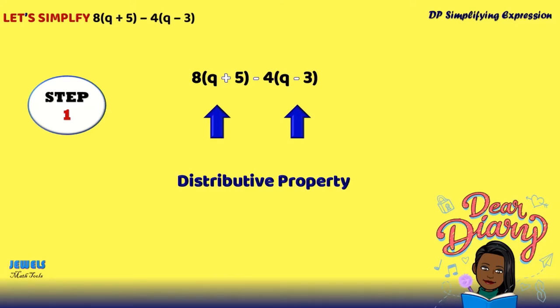We're going to be distributing our terms outside of our brackets to everything inside of their respective brackets. We'll begin by distributing our 8 to everything inside of the first bracket. 8 times Q will equal 8Q. 8 times 5 will equal 40.